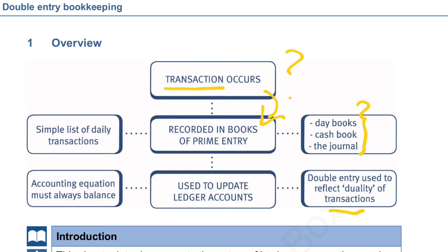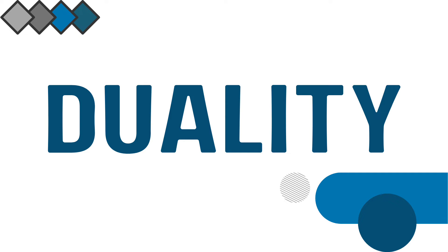Ledger accounts are balanced according to the accounting equation, based on the concept of duality. Duality means that whenever a transaction occurs, it affects at least two accounts. For example, if I purchase office equipment for my business, I am paying cash for it. Cash is also an asset. So one asset is coming in — the office equipment — and one asset is going out — the cash. There are two accounts affected by this transaction.